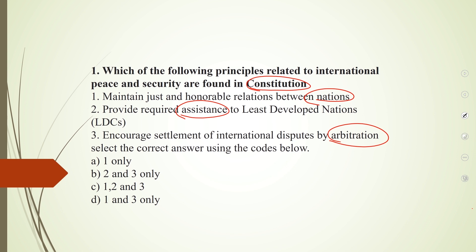Now let's look at Article 51, which talks about international peace and security. Under Article 51, there are four sub-clauses: first, to promote international peace and security; second, maintain just and honorable relations between nations; third, foster respect for international law and treaty obligations; and fourth, settlement of international disputes by arbitration. So the first and third options from the question are correct, making the correct answer option D — one and three only.